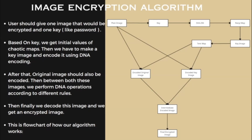Then we perform DNA operations — addition, subtraction, or XOR — according to the same Tent map values but in mod 3. After encoding, this produces an intermediate image. We decode this intermediate image from DNA values back to pixel intensity values of 0 to 255, and we finally get our encrypted image.